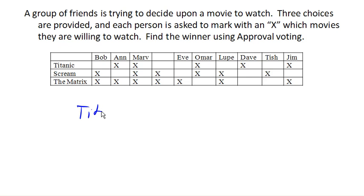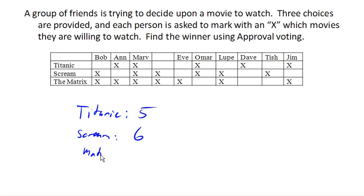So in this case, Titanic gets a total of five approvals. Scream gets a total of six approvals. And The Matrix has a total of seven approvals. So The Matrix is the winner under approval voting here.